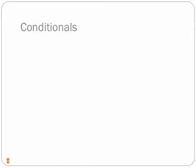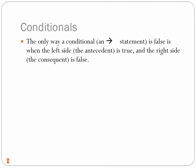Now let's talk about if-then statements — conditionals. The only way a conditional, which is an arrow statement, is false is when the left side — called the antecedent — is true, and the right side — called the consequent — is false. When the left side is true and the right side is false, that makes the arrow false. Otherwise, the arrow is always true.